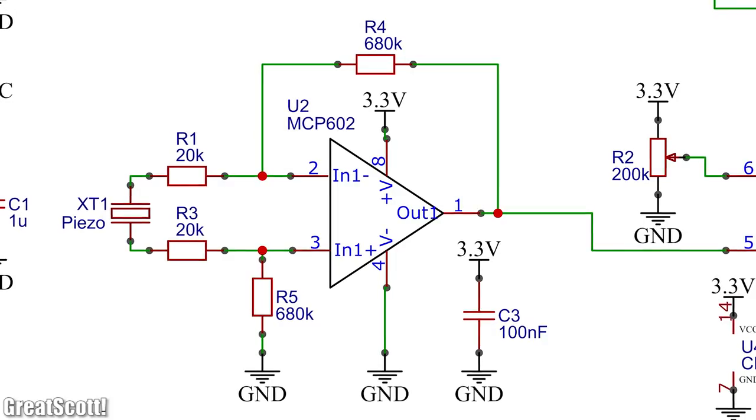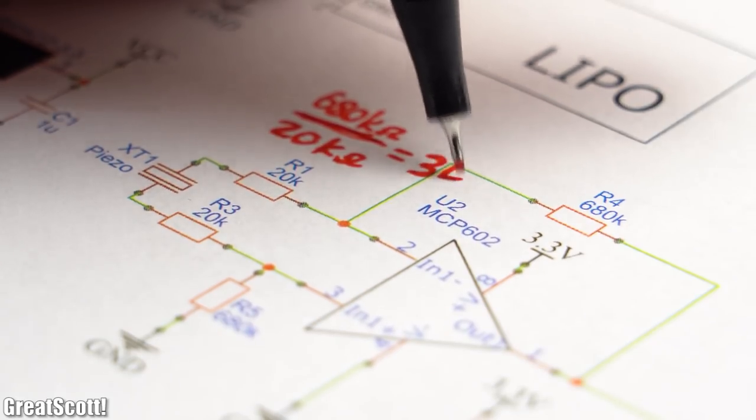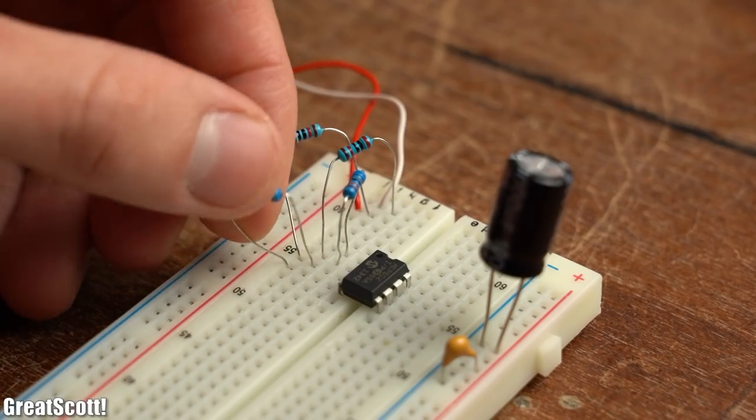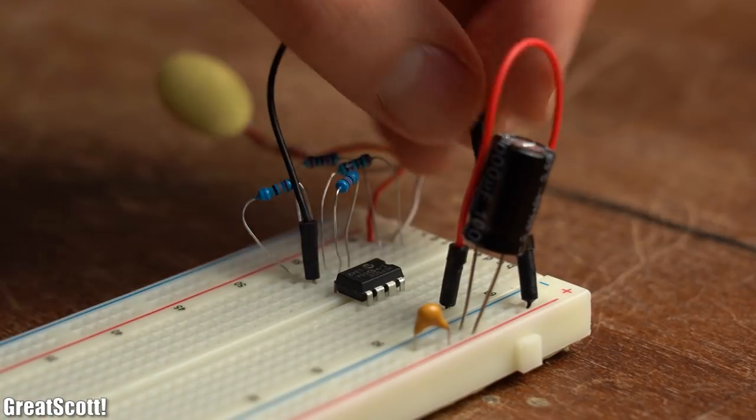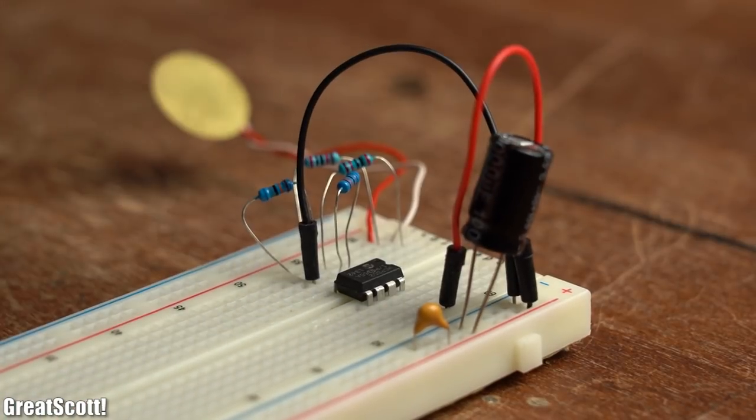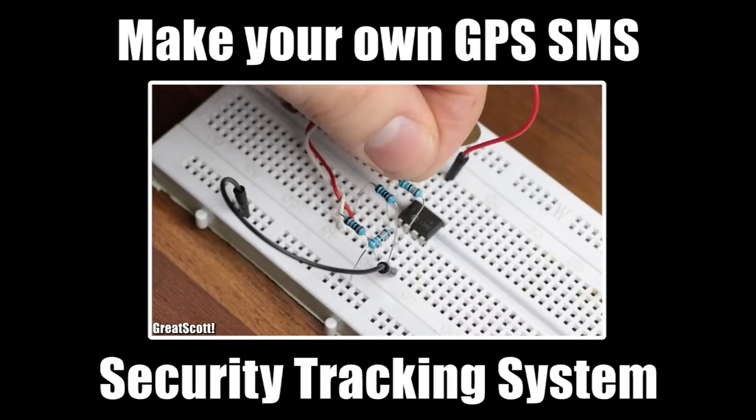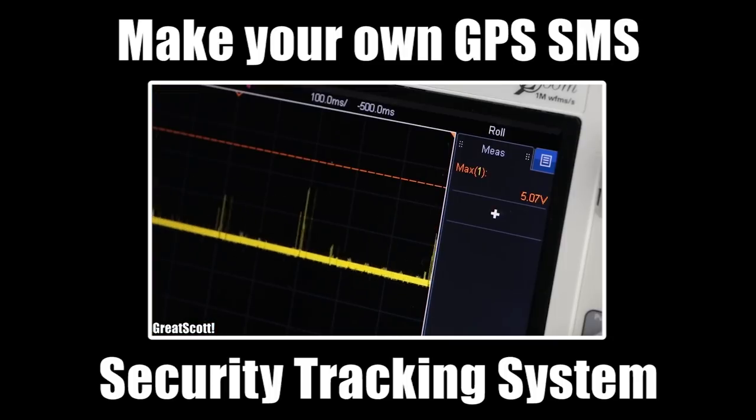But the achieved voltage levels are quite low so far, which is why we need such a differential amplifier circuit in order to amplify the voltage by a factor of 34. And while I'm building up this amplifier on a breadboard, let me tell you that this circuit might look familiar to you since I used it the exact same way in a previous project video in which I created a GPS SMS security tracking system.